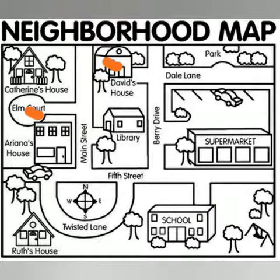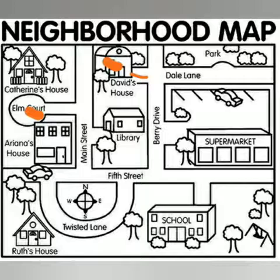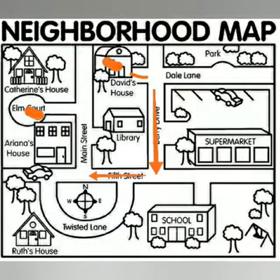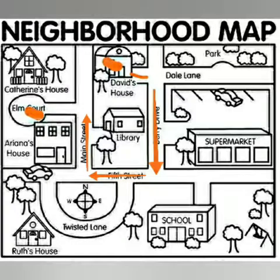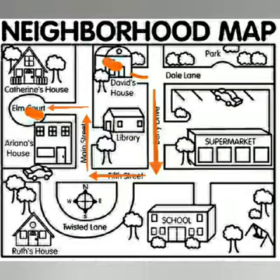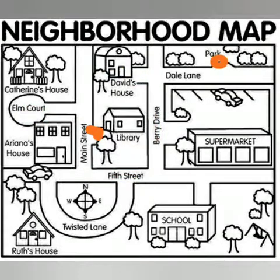Let's try a new way. We're going to start at David's house and go to Elm Court. From David's house we need to go straight. Then which way — left or right? Right. Now which way? We're going to take another right, and another right, and another left. Now we've reached Elm Court.